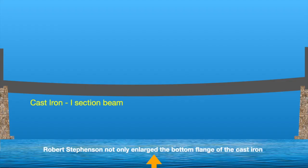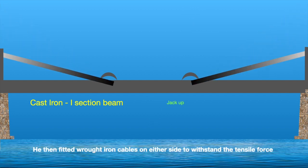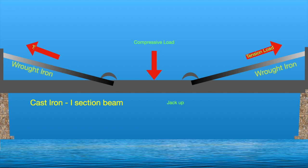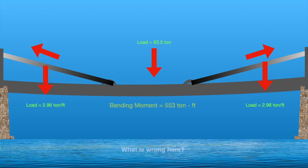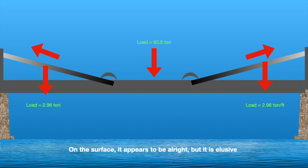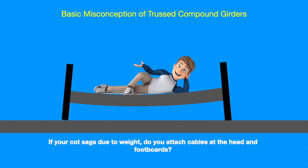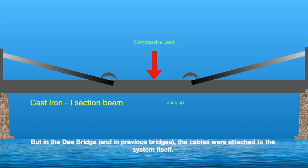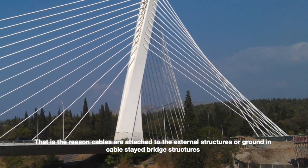Let's examine the design again. Robert Stephenson not only enlarged the bottom flange of the cast iron, but also pre-stressed it by jacking it up a few inches. He then fitted wrought iron cables on either side to withstand the tensile force and stretched them down a little. According to Hayward's calculation, the bending moment at the center of the span was 553 ton-feet. On the surface it appears to be alright, but it's elusive. Hayward describes the situation with an example: if your cot sags due to weight, do you attach the cable at the head and footboards? No — you would attach the cable to a stationary structure. But in the Dee Bridge and in the previous bridges, the cables were attached to the system itself, which did not provide any significant advantage. This is the reason cables are attached to external structures or the ground in cable-stayed bridge structures.